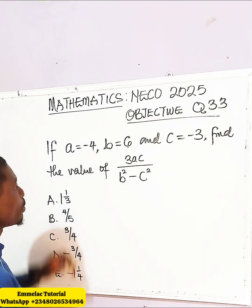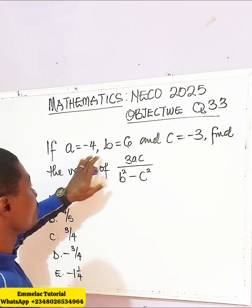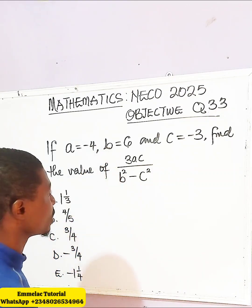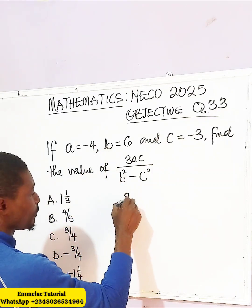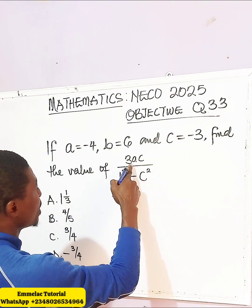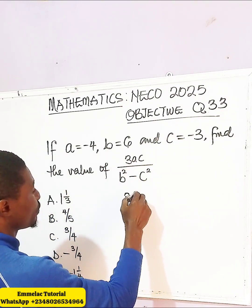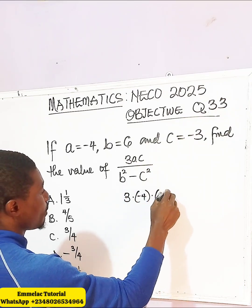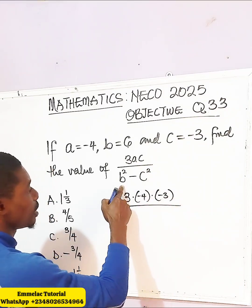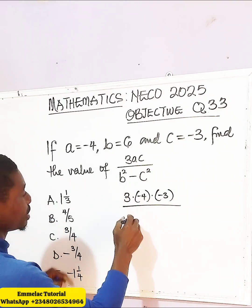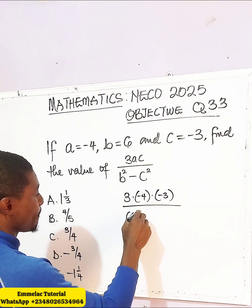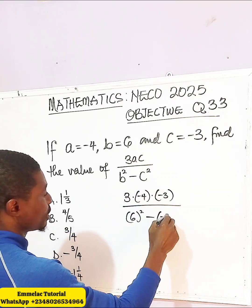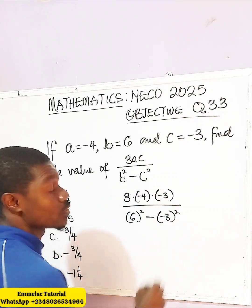So what we need to do is to plug in the values of each term into this fraction. So here you have 3, then times A which is negative 4, now times C which is negative 3, then all over B is 6 all squared, then minus C, negative 3 all squared.